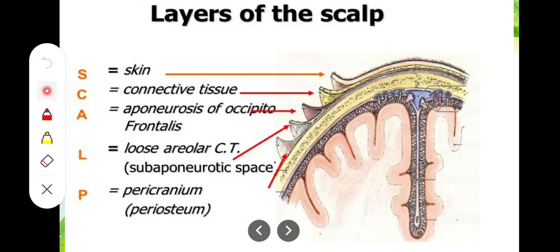We will see the layers of the scalp, which we cut during various cranial surgeries. There are five layers, and these are simply represented by the full form of the word SCALP itself: Skin, Connected tissue (subcutaneous tissue), Aponeurosis of the occipitofrontalis muscle — also called the galea aponeurotica or epicranial aponeurosis — Loose areolar connective tissue, and Pericranium or periosteum.